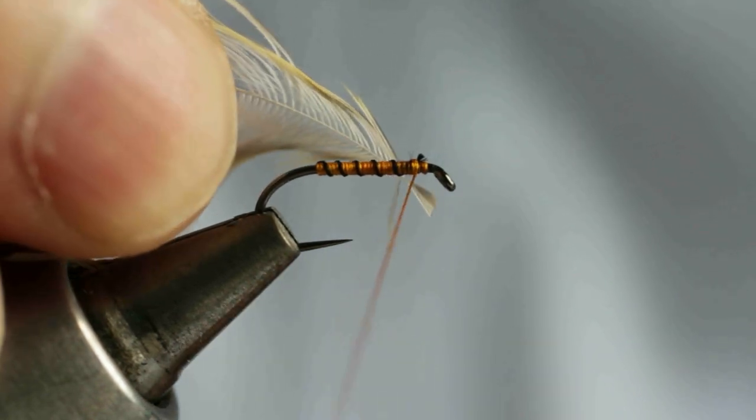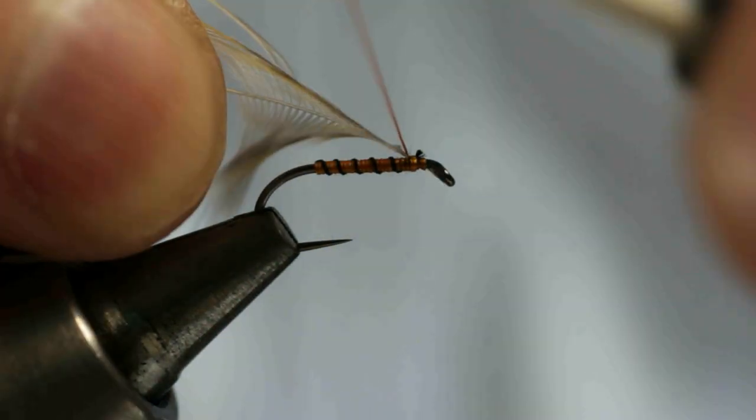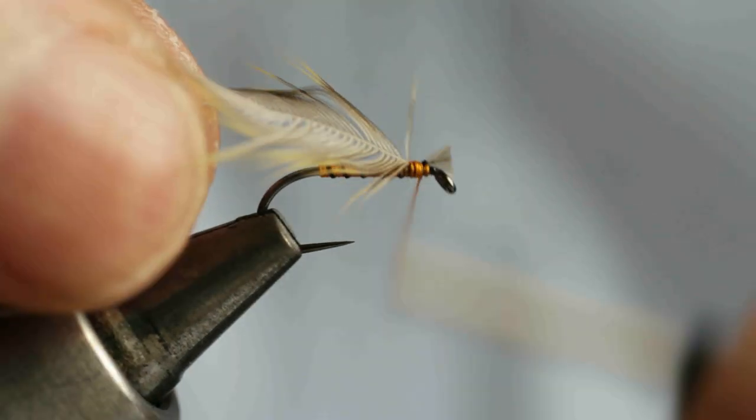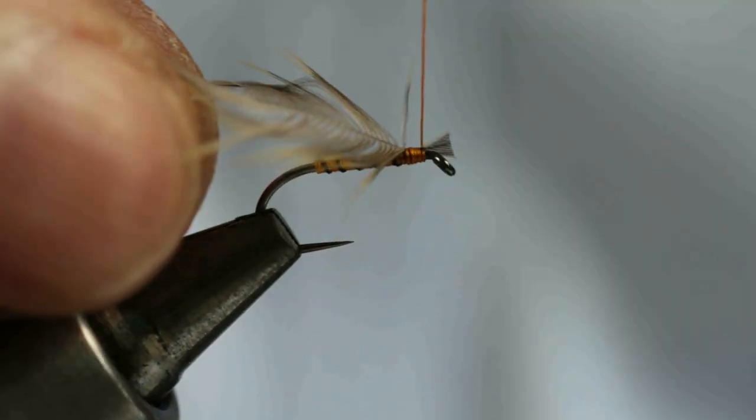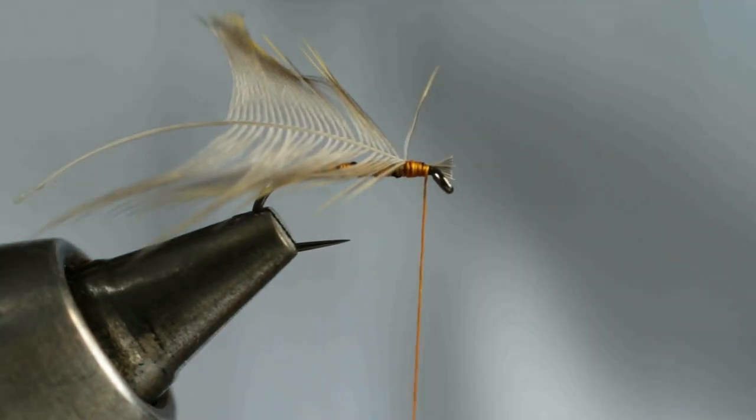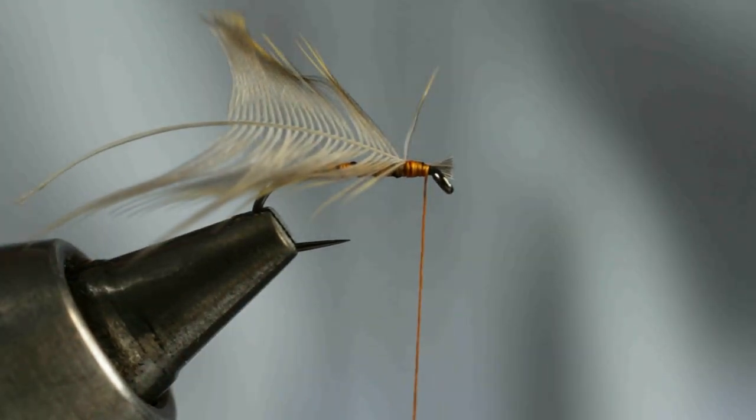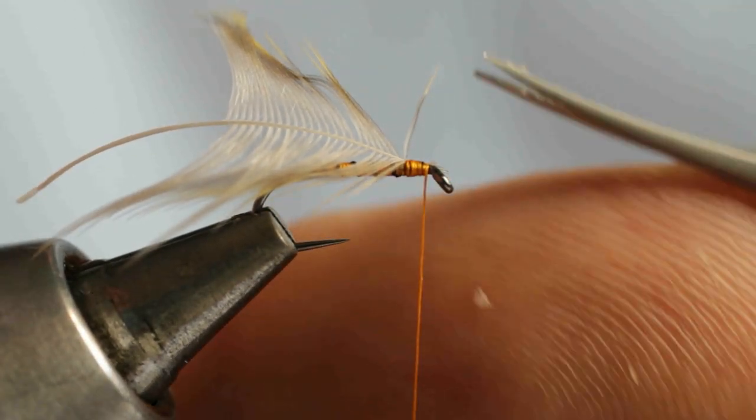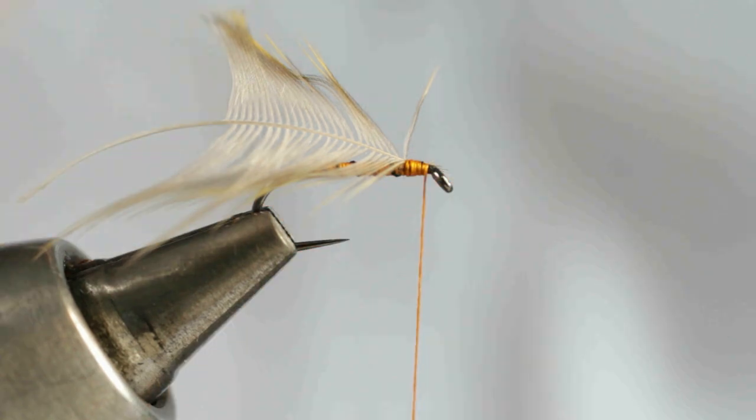Now catch it in with three or four nice firm wraps of silk so it's not going to go anywhere. If you've got any excess tip just cut it off away from the eye of the hook so it's nice and clean.